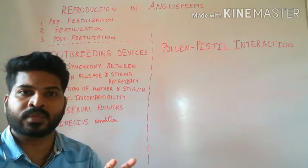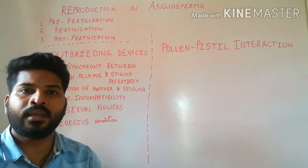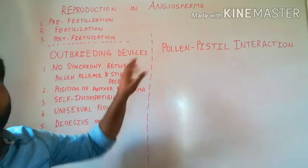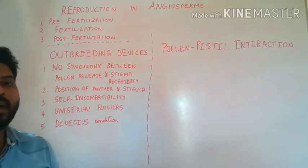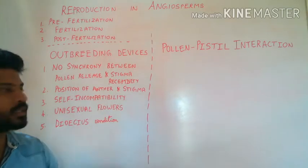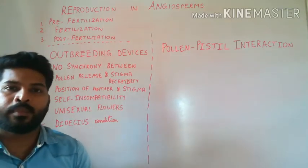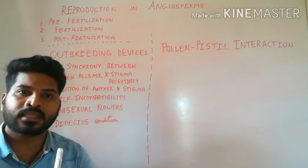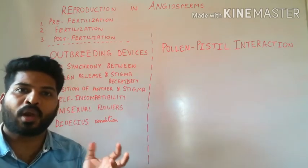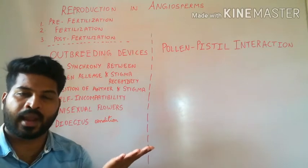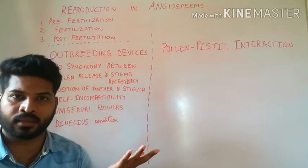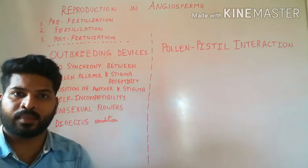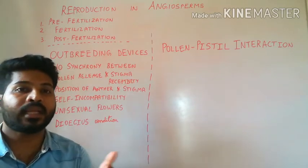These mechanisms by which flowering plants prevent autogamy or self-pollination are known as outbreeding devices. We can summarize the outbreeding devices under five points. Point number one: plants ensure that there is no synchronization between pollen release and stigma receptivity, meaning either the pollen grains will mature very early and the ovary will mature later or vice versa, due to which either one of them is unavailable for fertilization, hence preventing self-pollination.